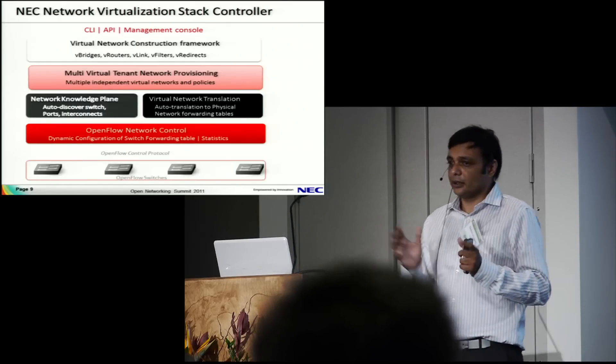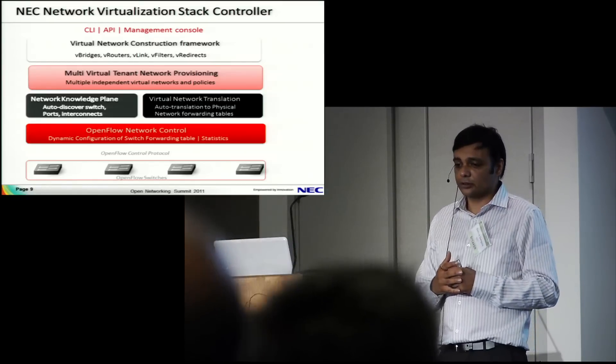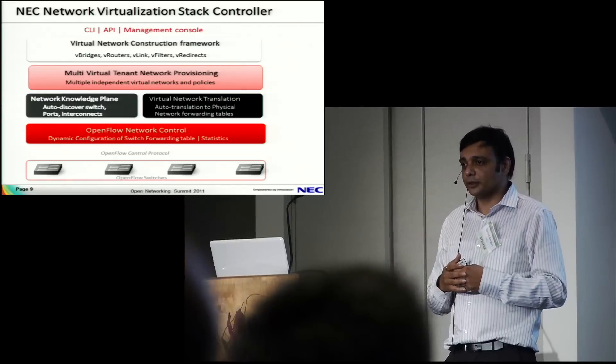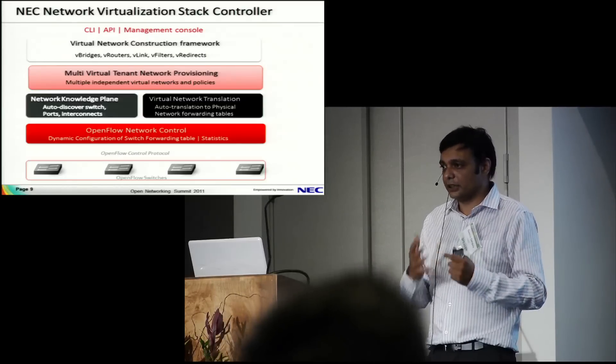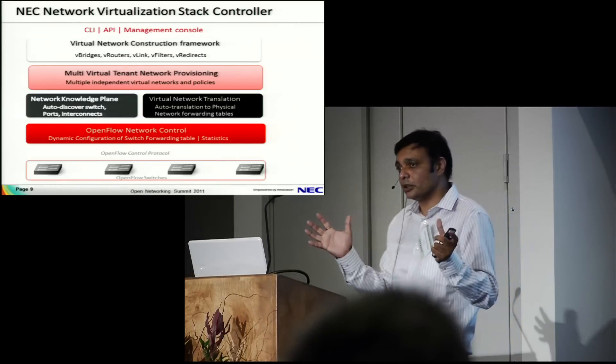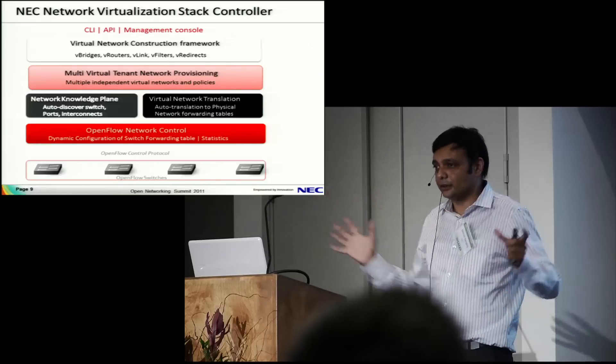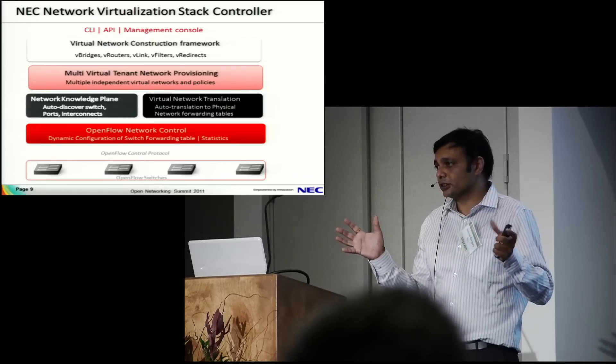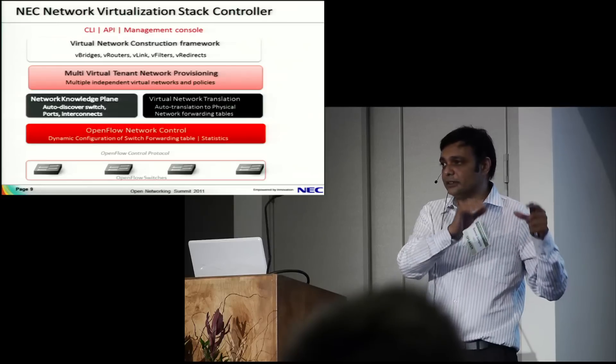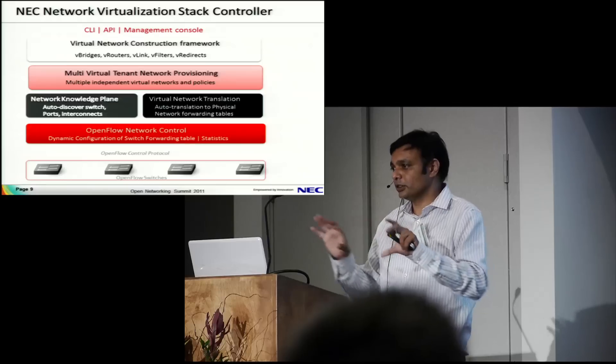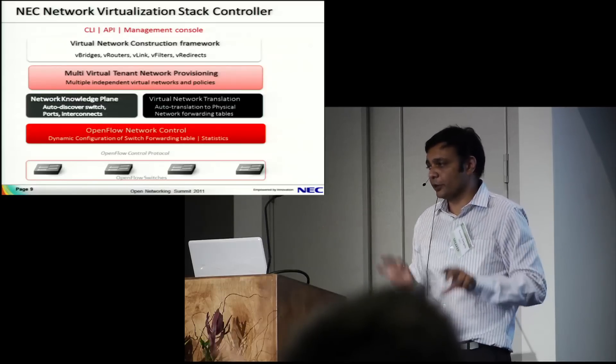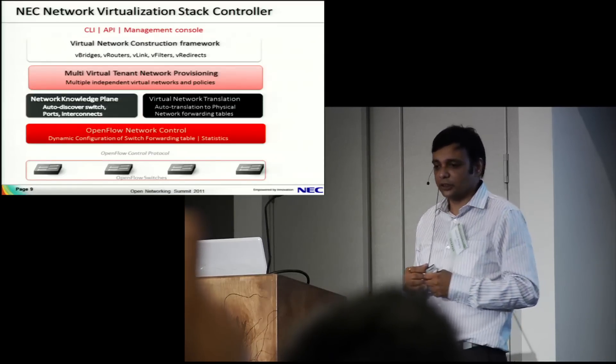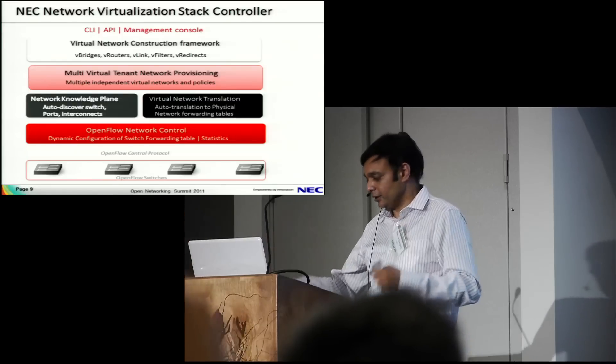The virtual stack is built on top of an OpenFlow controller. An important part is a network knowledge plane which continuously gathers topology information to get a whole topology understanding on a continuous basis. That's how you're able to do end-to-end routing and network-level virtualization. On top is the multi-tenant virtualization, so if one tenant is writing policies and rules, it doesn't conflict with others. There's model checking to ensure no conflict among tenants when you deploy. It exposes bridges, routers, and links to create your network.